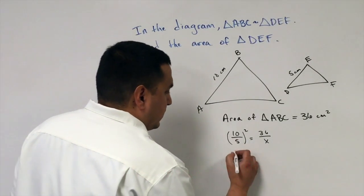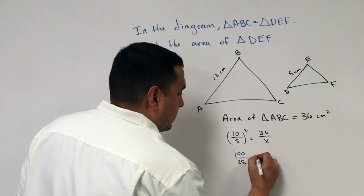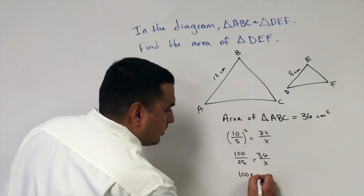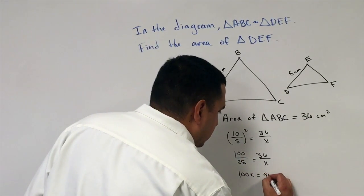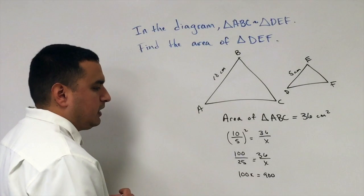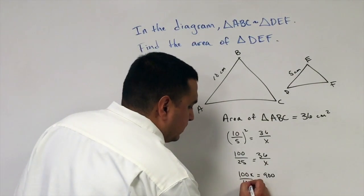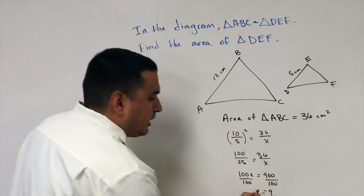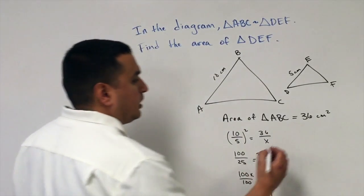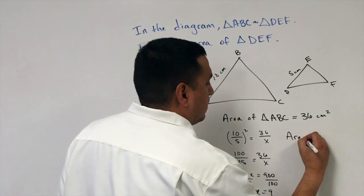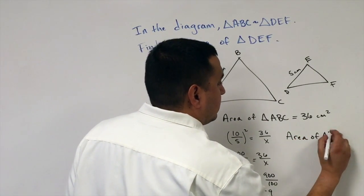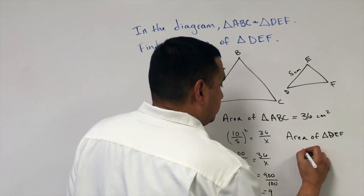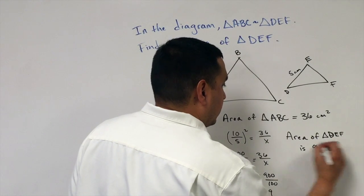Squaring the ratio gives 100 over 25 equals 36 over X. So 100X equals 25 times 36, which is 900. Dividing both sides by 100, X equals 9. Since X was the area, the area of triangle DEF is 9 centimeters squared.